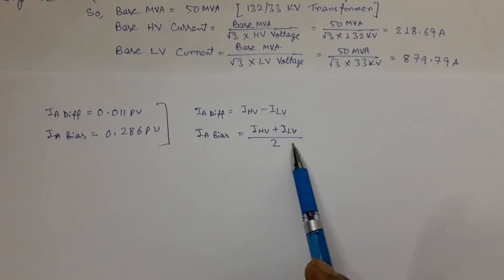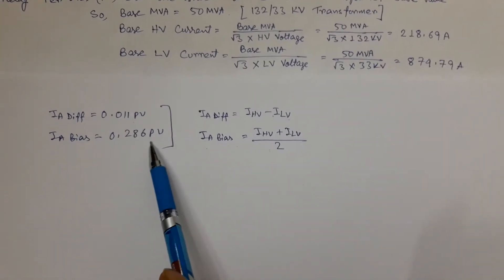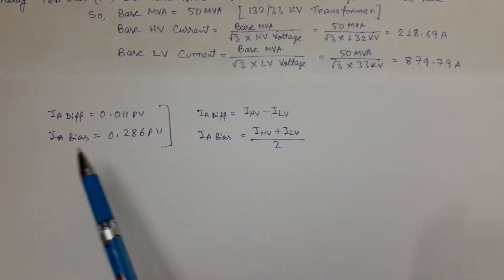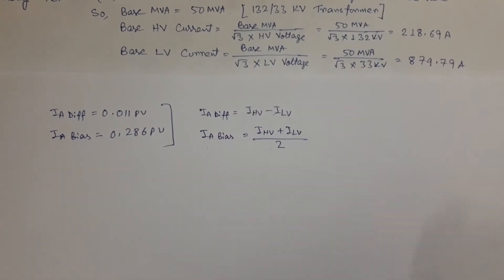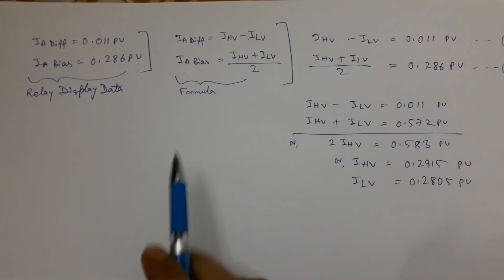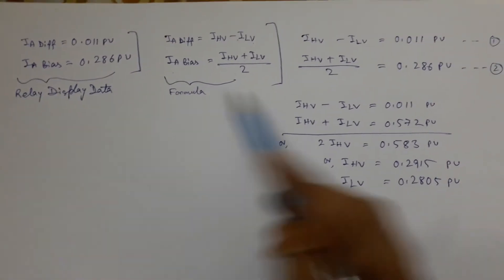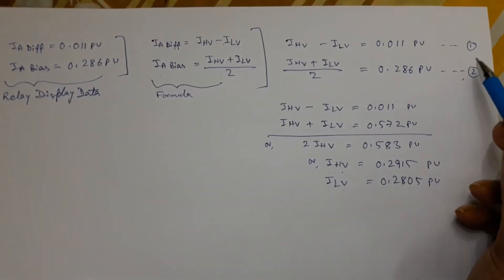We get these two values of differential and bias current in respect of A phase from relay display. So by using this formula and these relay data, we can write these two equations.